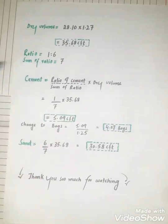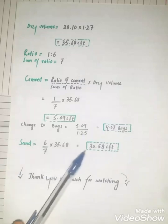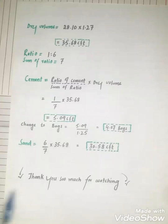Now find sand: 6 divided by 7 multiply by 35.68. The sand needed: 30.58 cubic feet. Thank you so much for watching. Inshallah, see you with another video. Bye bye.